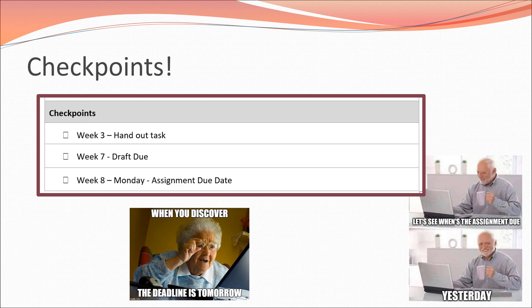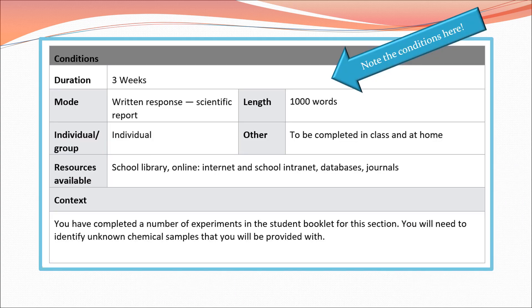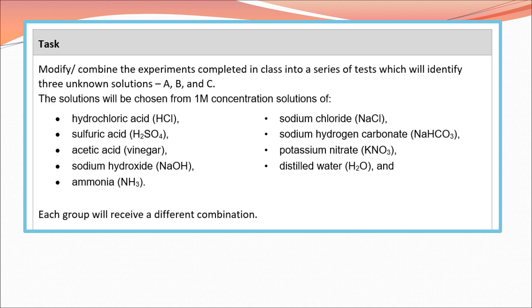Here are our checkpoints. Week three, we're handing out the task. Week seven is your draft - that's the start of week seven. And the start of week eight, you have your final draft due that you have to hand in online. Note the conditions: we've got a few weeks of class time to do this, and you do have a word limit - don't go over that. Whilst you do the experiments in class as a group, the write-up is an individual task and everybody has to have their own write-up. You'll be given three samples labelled A, B and C from the list.